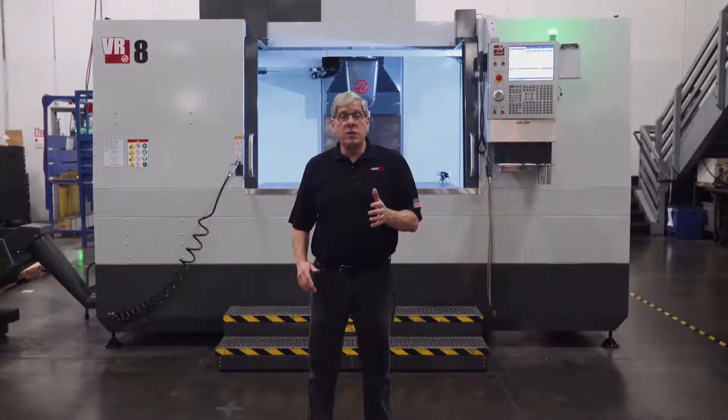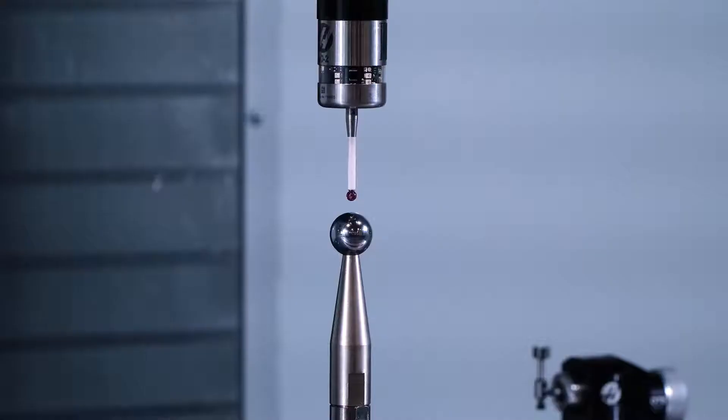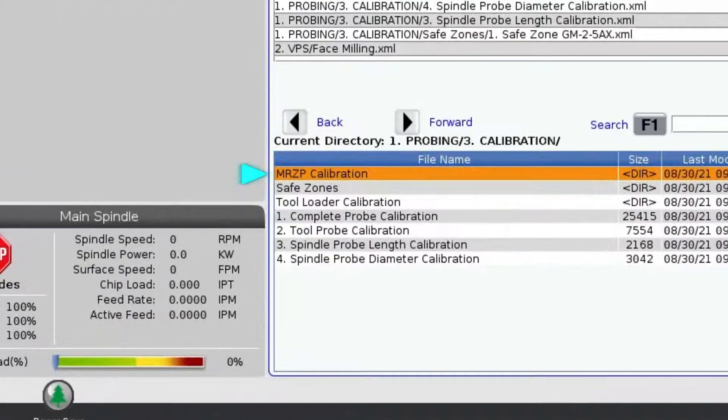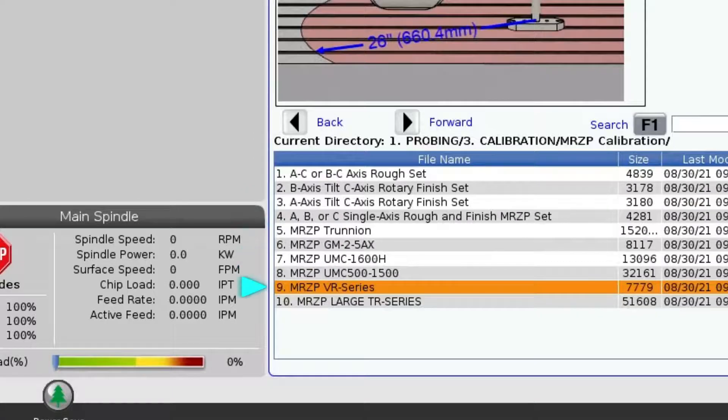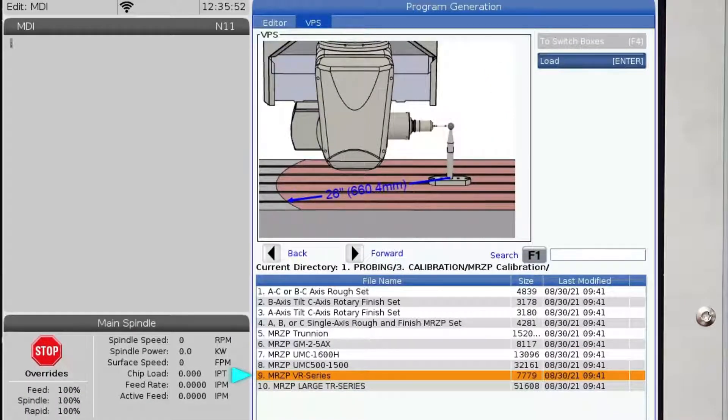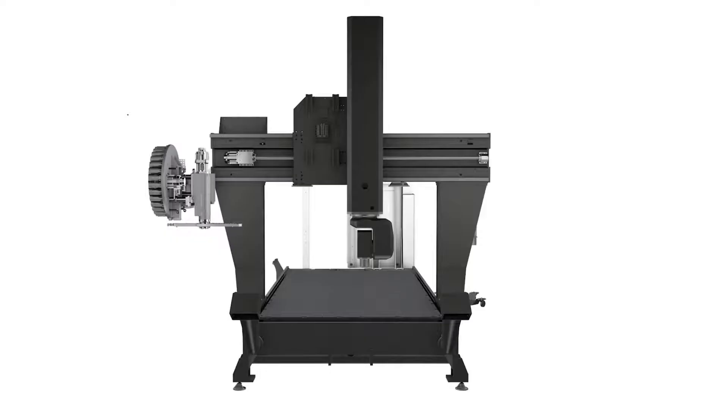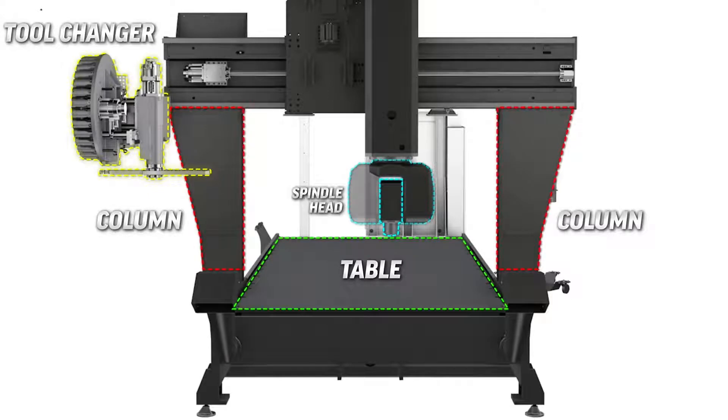Hey everyone, I'm John Nelson with Haas Automation. This video will take you through the process of running probing cycles to measure and set machine rotary zero point and safe zone calibration position settings on Haas VR series 5-axis gimbal head machines. There's a similar process for the GM2 5-AX machines, but there are key differences. If you have a GM2 5-AX machine, stop this video now and watch the GM2 5-AX MRZP and safe zone calibration video.